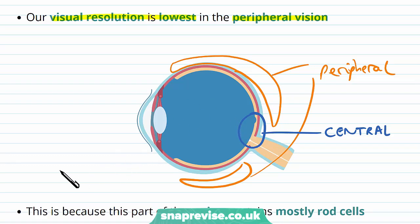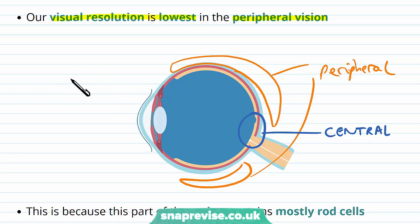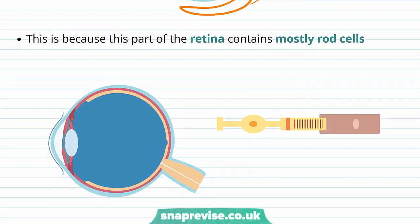Anything in our periphery — if you look to the top, left, right, and bottom without actually turning your eye — will be the least focused objects in your environment. The bits you're looking at directly will be the most focused. The reason peripheral vision is lower resolution is that this part of the retina contains mostly just rod cells.